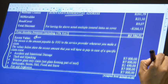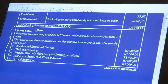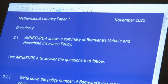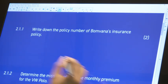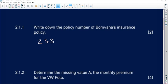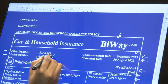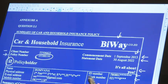Annexure A shows a summary of Bomvana's vehicle and household insurance policy. Question 2.1.1: Write down the policy number. The policy number is given on the document: 2338835. This is where I got the policy number from.